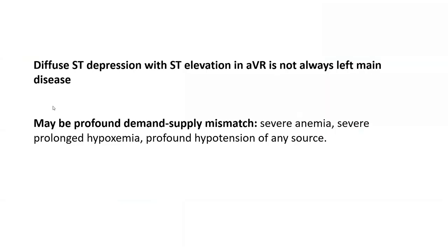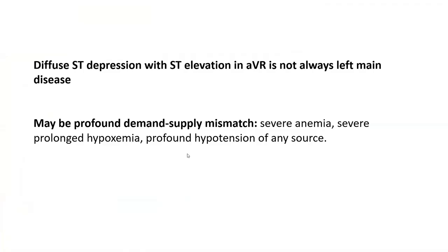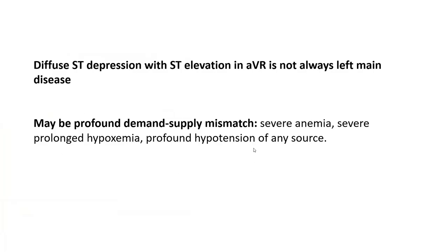An important idea: when you have this pattern it's not always a primary coronary process with left main ischemia. Even when you have pronounced ST elevation in AVR, keep in mind it could be secondary coronary ischemia. I've seen this pattern frequently in patients with septic shock, profound hypoxemia, profound anemia, or profound bleeding — you can get secondary myocardial ischemia with diffuse subendocardial ischemia and ST elevation in AVR and V1. Take the context into account — it may be profound demand-supply mismatch, not a primary coronary process.